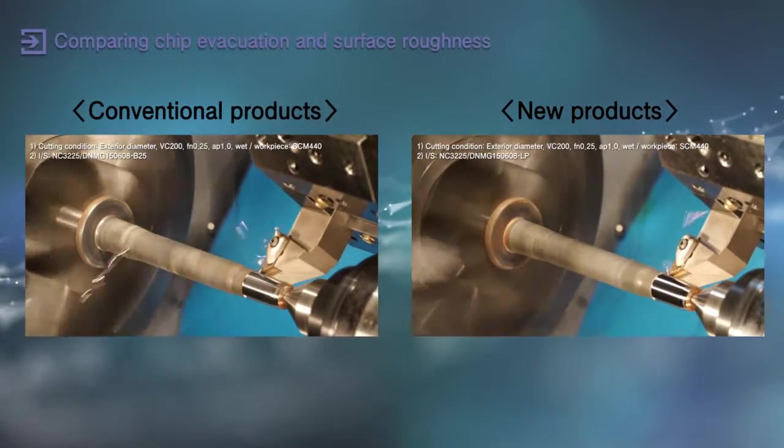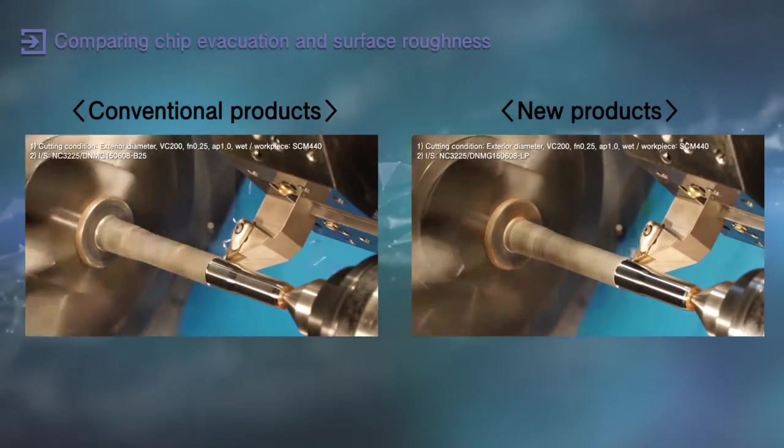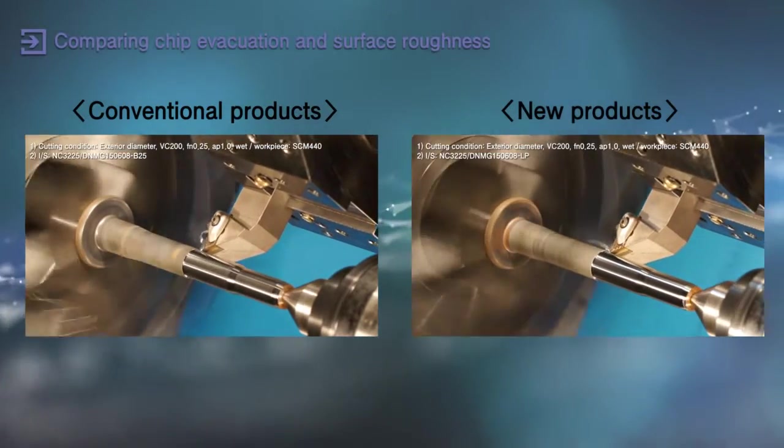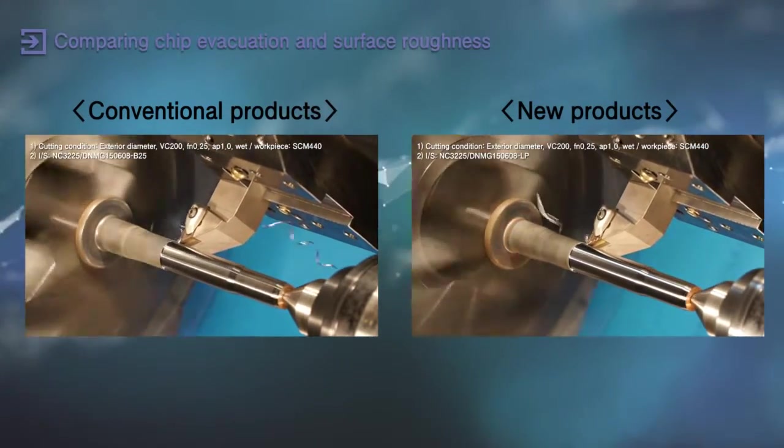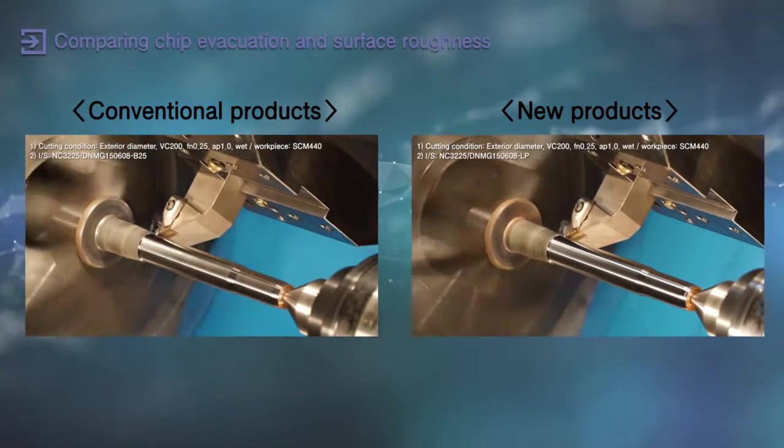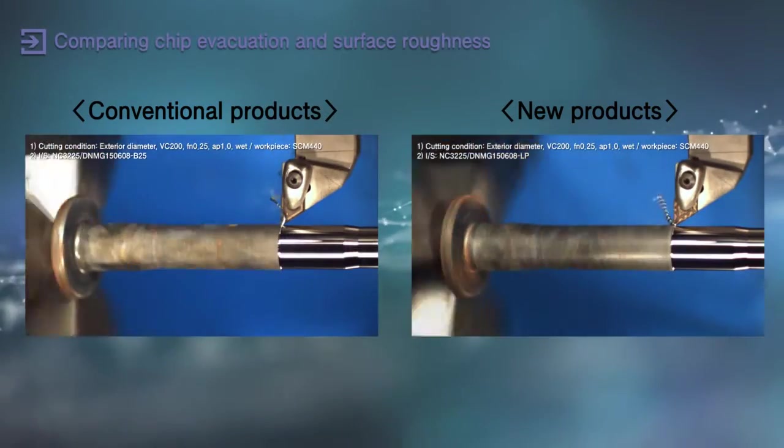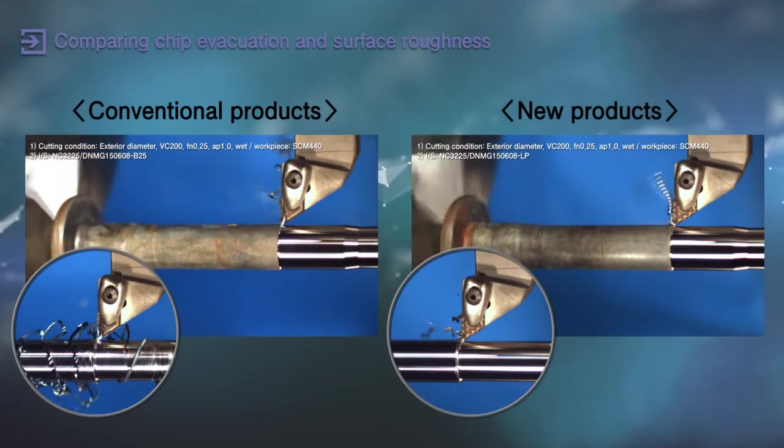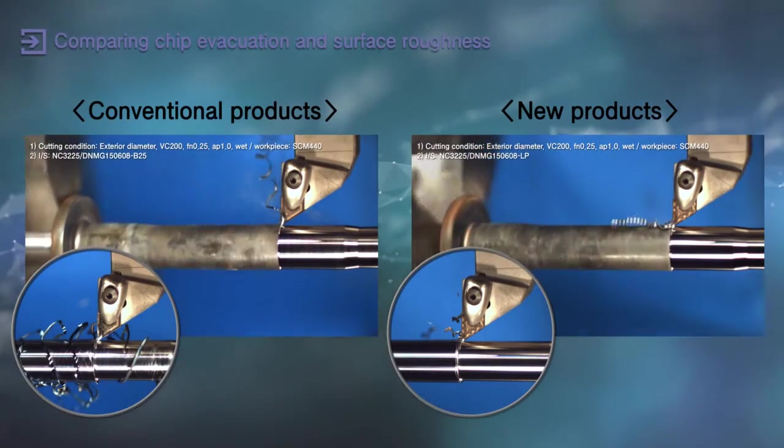NC3215 and NC3225 with new LP chip breaker - turning inserts for steel guaranteed to continually deliver efficient productivity with excellent chip disposing ease.